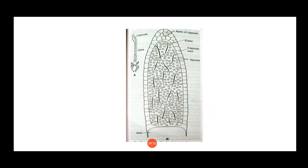The combination of a unistratose capsule and a massive calyptra in the order Calobryales is a specific feature. The Calobryales can be seen as a synthetic genus — the gametophyte has features of special interest, being both primitive and advanced in nature.